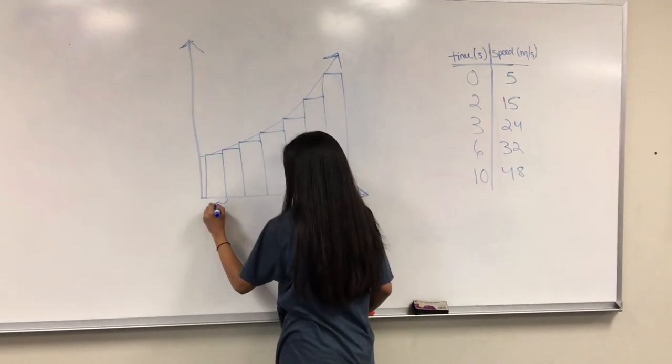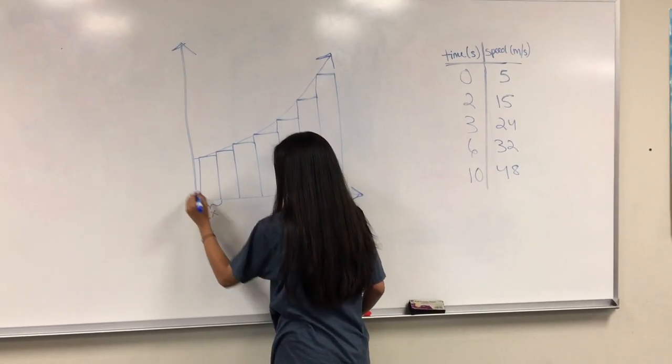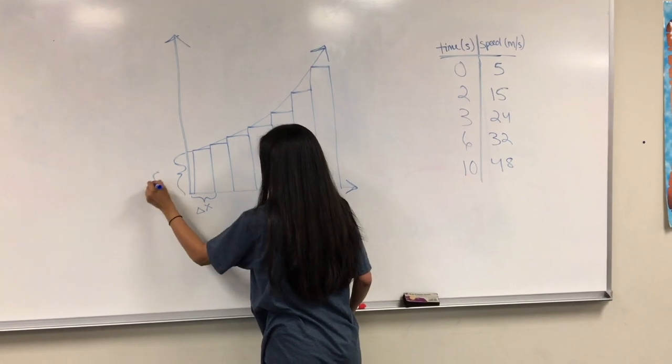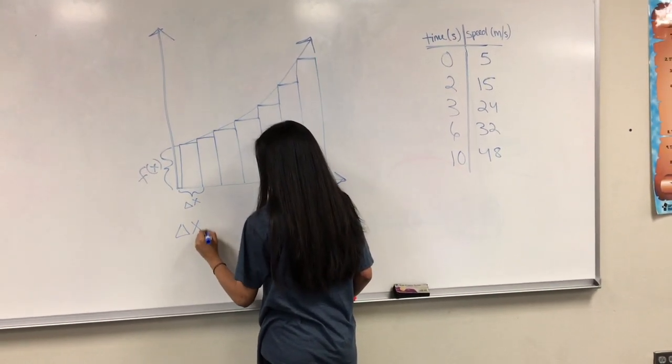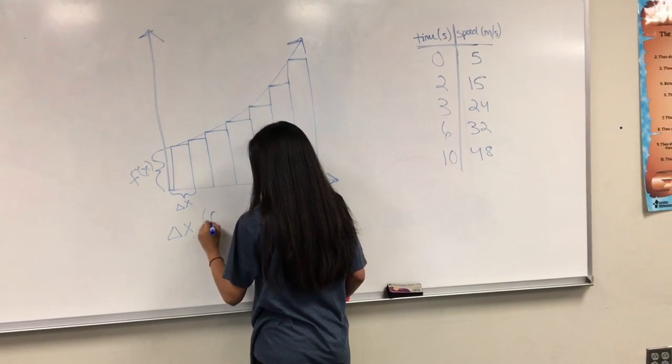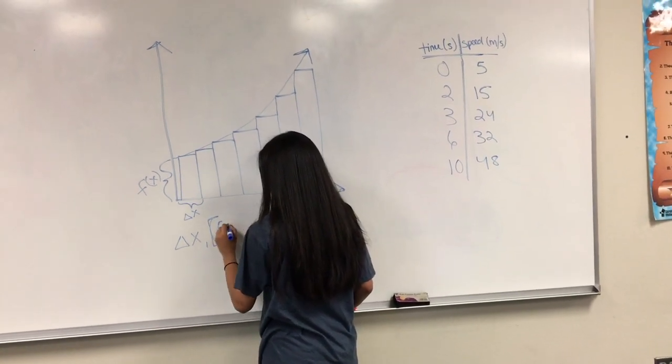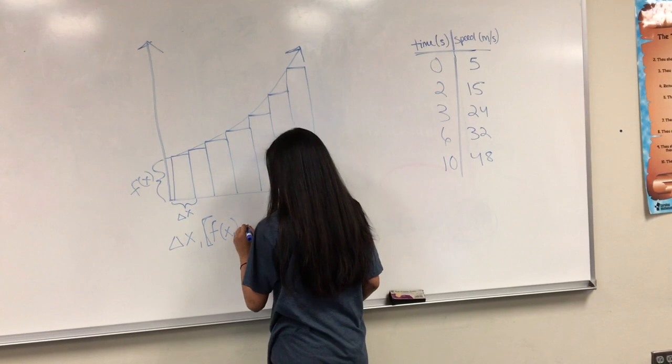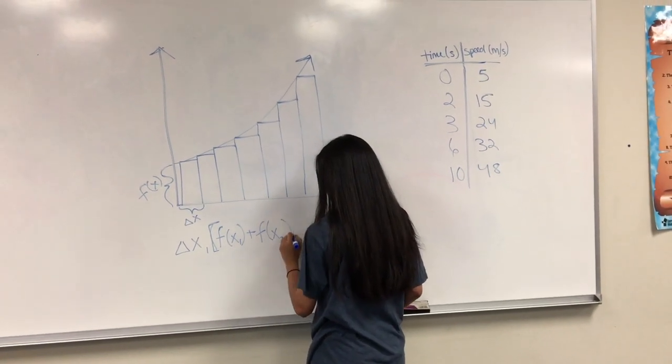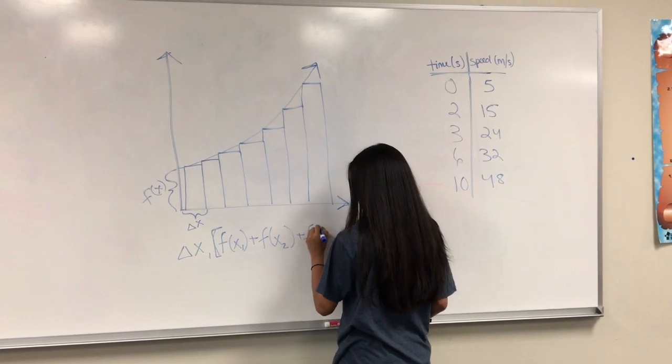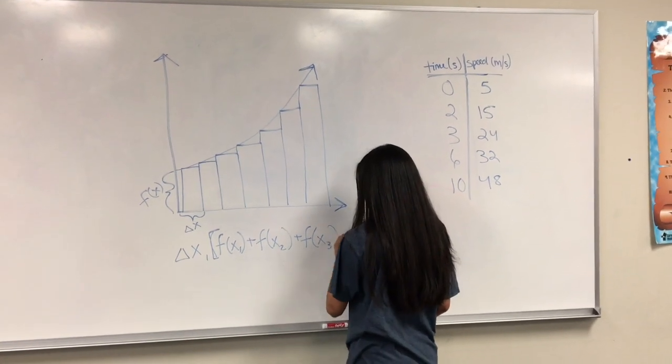To begin, start by finding the coordinates where the corners of the rectangle touch the curve. These points are the values that will be plugged into the formula with two variables where delta x represents the change in x value between each rectangle. In other words, this value represents the width of the rectangle, and f of x, which represents the height of each rectangle. If the data table has given different subintervals, we'll need to individually multiply delta x by the corresponding f of x value.